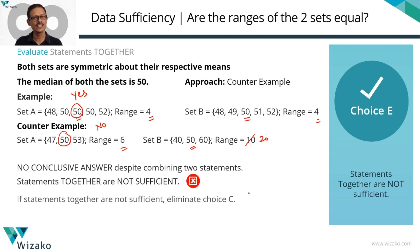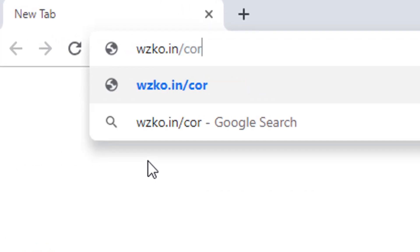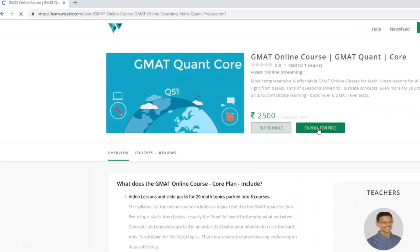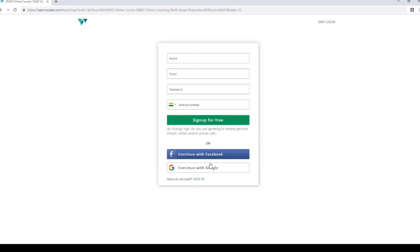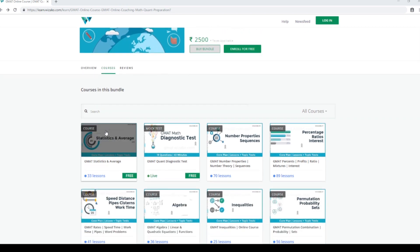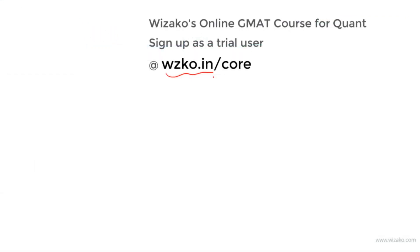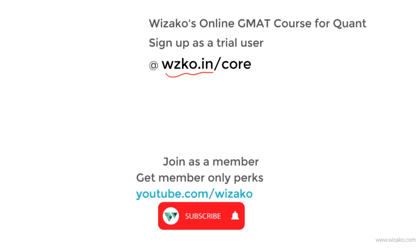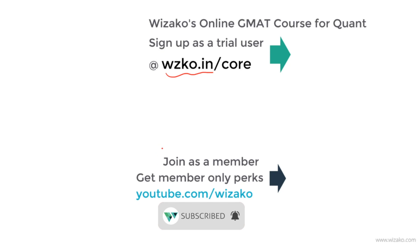This question tests our ability to look for a counterexample. Sign up as a trial user at wzko.in/core — one of the most comprehensive online GMAT courses. Get started with a free topic on statistics and averages to build momentum. Subsequently, pay to unlock remaining topics. Subscribe to youtube.com/wzko and spread the word. You may also join the channel as a member for a small monthly fee and enjoy member-only perks to boost your GMAT preparation.